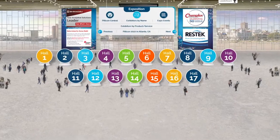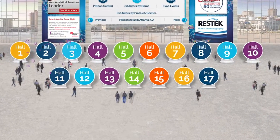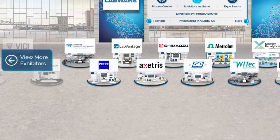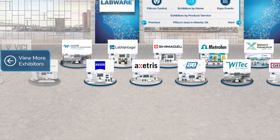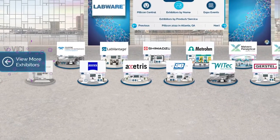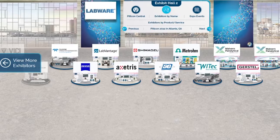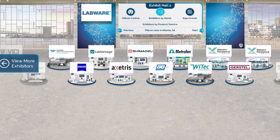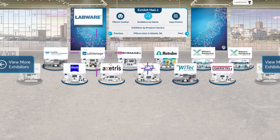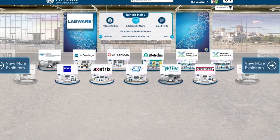When you enter the exposition you will find 17 expo halls. Each expo hall has 11 booths and doorways to move to the next or previous hall. To visit a booth in a hall, click on the individual booth image or logo to enter.